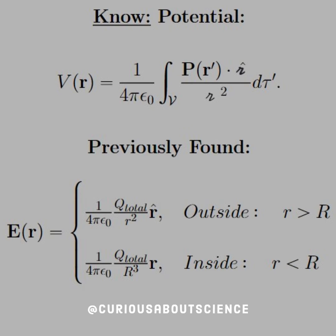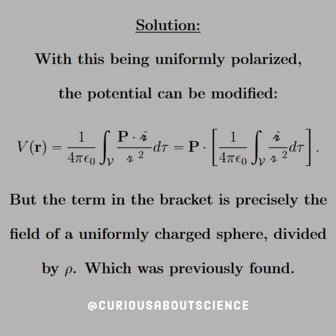A little hindsight can give us some foresight. What was previously found was the electric field inside and outside a uniformly charged sphere. For the solution, let's first understand our configuration. They told us there was a uniform polarization in the sphere, which means we can take that polarization outside of the volume integral, since it is uniform, and dot it with the vector product of the integral.